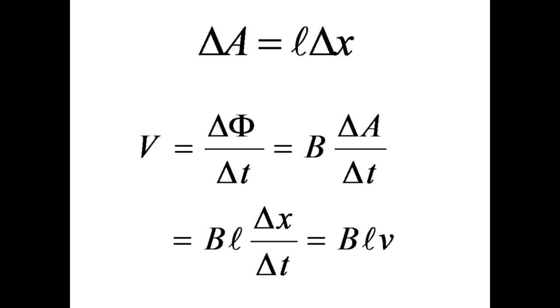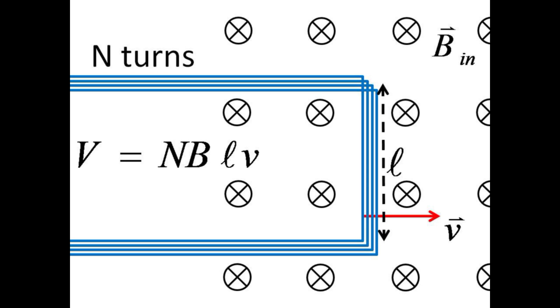This is the same expression for induced voltage that we had previously by analyzing the force on free charges in the conductor. If we use a coil with N such rectangular loops, we can enhance the induced voltage by a factor of N. This is why any real electrical generator will have many, many loops or windings of wire moving in a magnetic field.